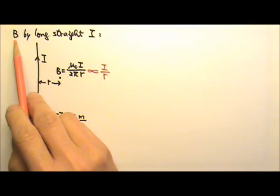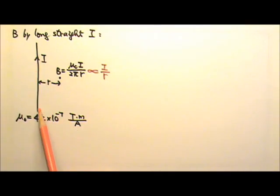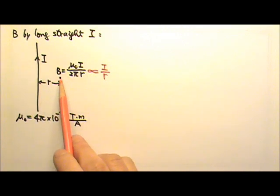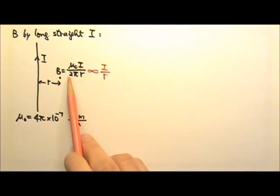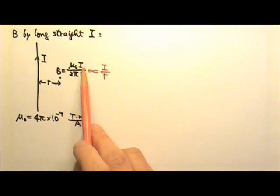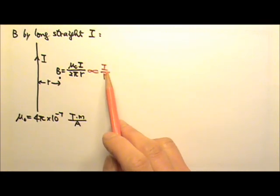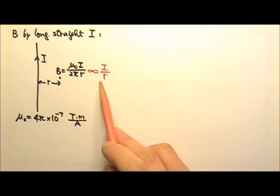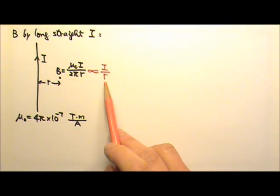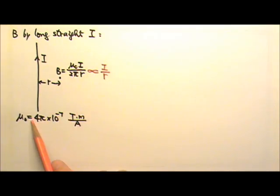To find the magnetic field produced by a long straight current a distance r away, we can use this equation: B equals mu nought I over 2 pi r, which means the strength of the field is proportional to the current and inversely proportional to the distance r, where mu nought is this value here.